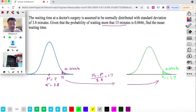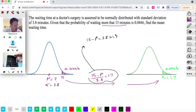Yeah, so this is a very simple equation to solve. I'm just going to solve this equation up here. So basically 15 minus mu is equal to 3.8 times 1.7. And that should be 3.8 times 1.7.